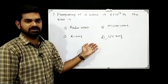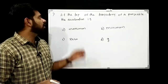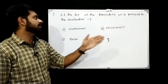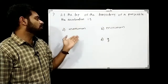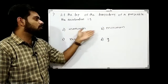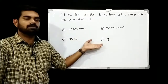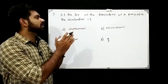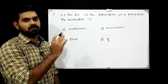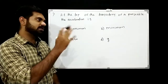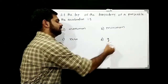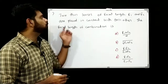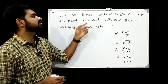At the top of the trajectory of a projectile, the acceleration is: option A: maximum, option B: minimum, option C: 0, option D: g. In projectile motion, the acceleration is constant and always equal to g.